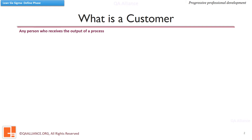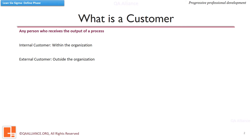Let's understand what we mean by a customer. Any person who receives the output of a process is a customer. We can have two types of customers: internal and external. Internal customers are within an organization — one department can be a customer to another department providing any form of inputs. External customers are those outside the organization.